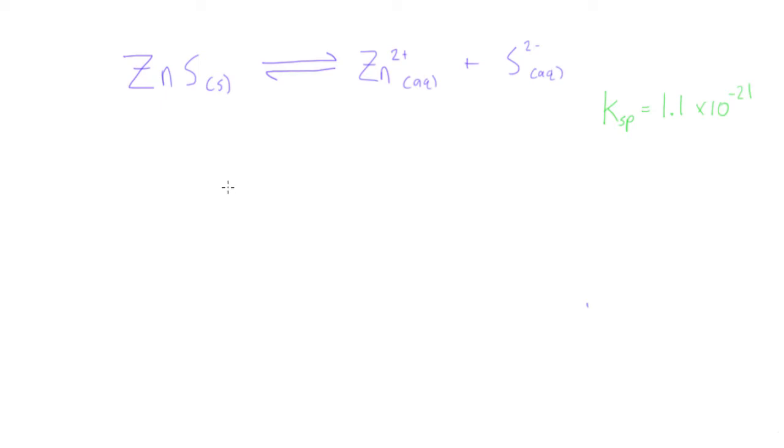All right, what we're looking at here is we're trying to find the molar solubility of a compound. In this case, it's zinc sulfide, and we're going to do this dissociation in water into zinc ions and sulfide ions.